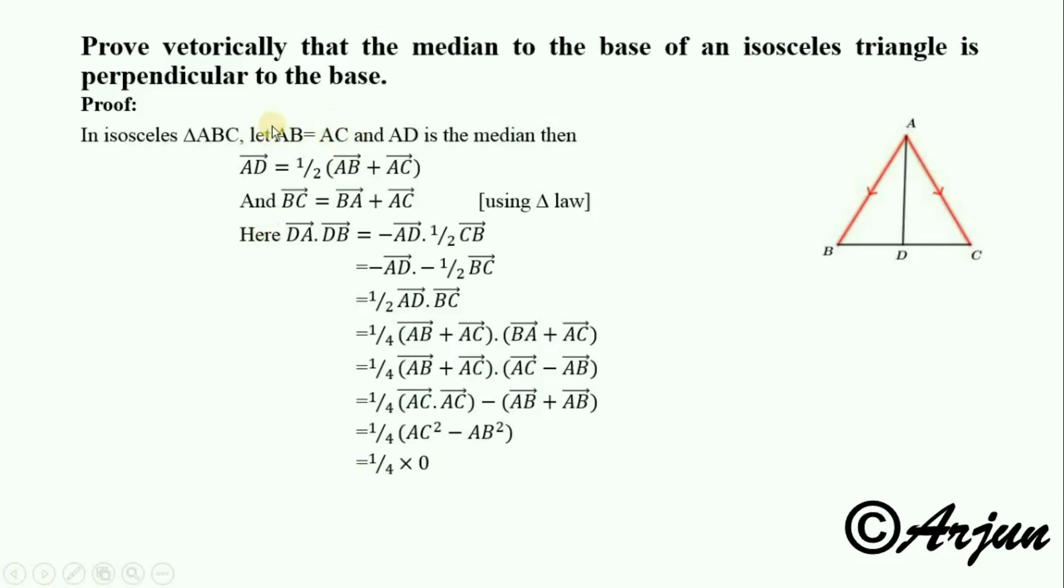Now using the property that AB equals AC in an isosceles triangle, the equal sides mean AC and AB are the same. Therefore, AC minus AB equals zero.